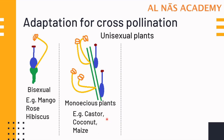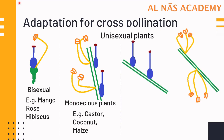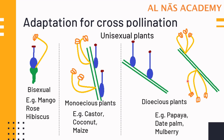In a monoecious plant, autogamy is totally prevented but geitonogamy can take place. When both male and female parts are on different plants and the flower is unisexual, such plants are known as dioecious. Examples are papaya, date plant, and mulberry.